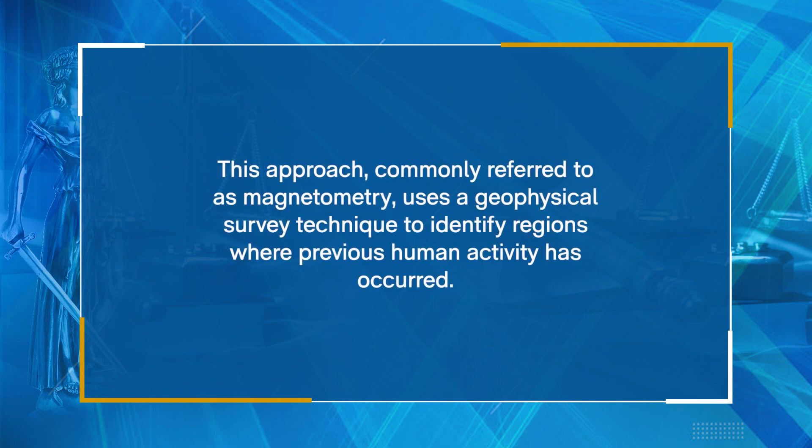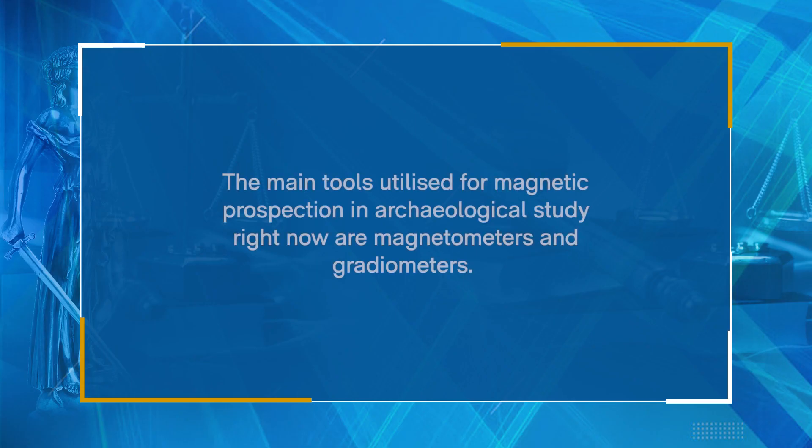The second important survey methodology is the magnetic survey, commonly referred to as magnetometry. This geophysical survey technique identifies regions where previous human activity has occurred by mapping the magnetic properties of soil, subsoil, and bedrock for spatial variation and contrast. It is used in grasslands, agricultural fields, and open soil areas and is especially useful for identifying metal artifacts, ovens, hearths, filled-in pits, wells, foundations, tombs, and other structures. The main tools utilized are magnetometers, which aid in determining magnetic waves that in turn help indicate the date and related information about an artifact.